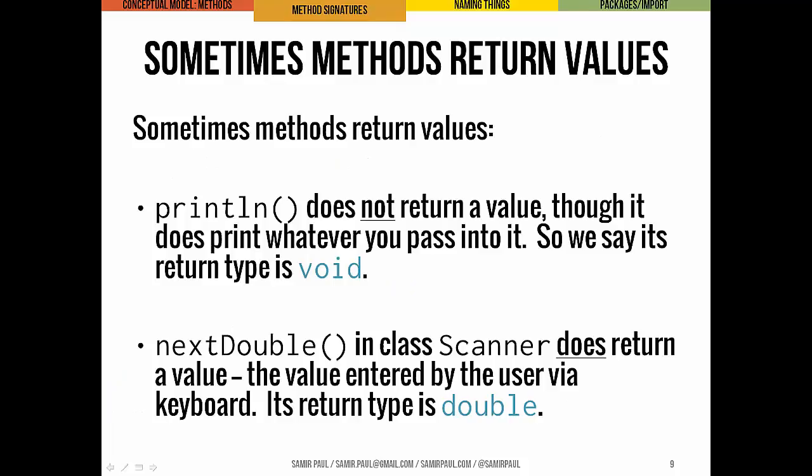Sometimes methods return values; not always. Println does not return a value. That might be confusing because you might think printing to the screen is the output — but printing to the screen is different from actually returning a value. For println, though we print something to the screen, there's no value returned, so we say its return type is void. NextDouble, in the Scanner class, does return a value — entered by the user via the keyboard — and that value is a double.